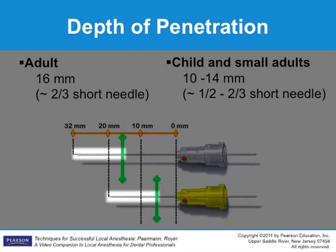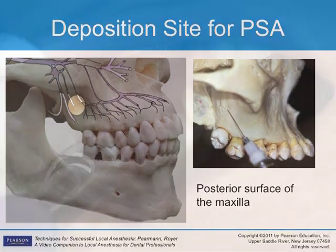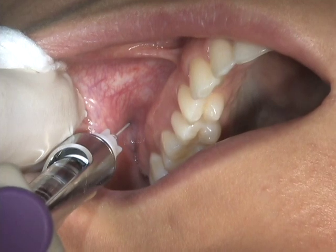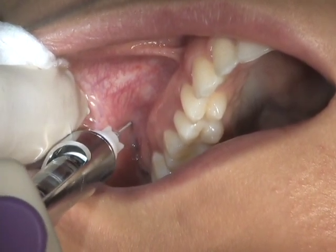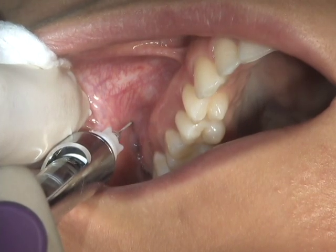The depth of insertion is approximately 16 millimeters, which will place the tip of the needle in the area of the PSA foramina — the terminal deposition site for this injection. For patients with a high maxilla, insertion of the needle may need to be slightly deeper; for a low maxilla, insertion will be slightly less.